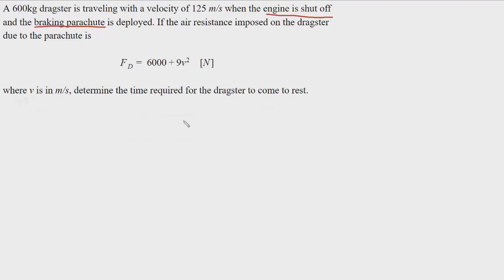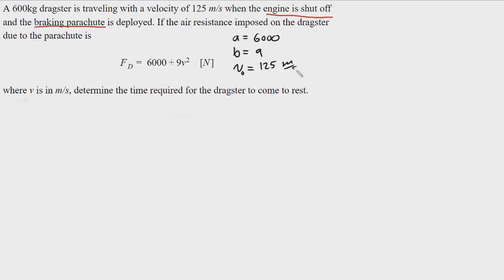Before we get started, I like to define some constants so we can keep the final equation as abstract as possible, and at the very end we just plug in numbers without dealing with arithmetic in the middle. We define a = 6000, b = 9, getting those constants from the equation, and we define the initial velocity as 125 meters per second and the mass of the dragster as 600 kilograms.